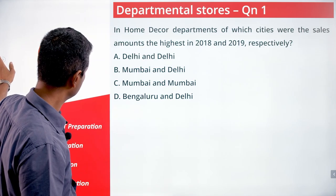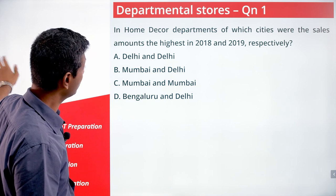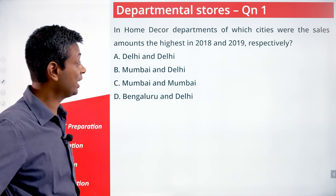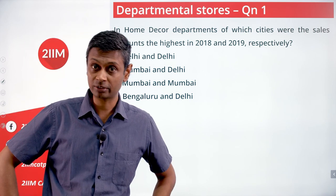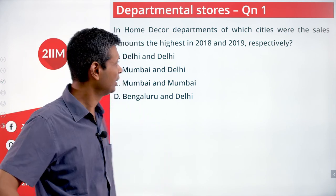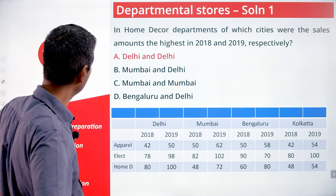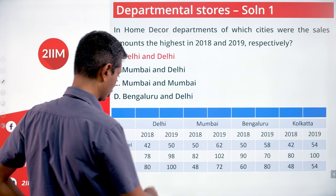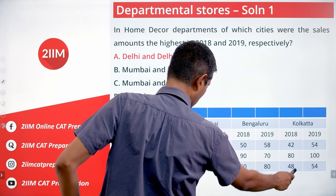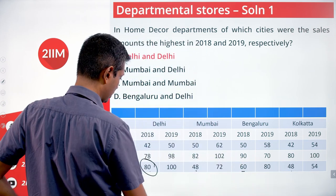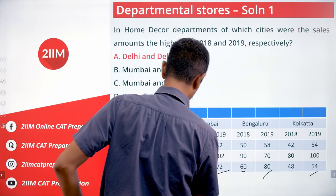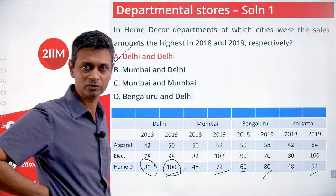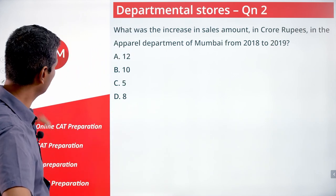In the home decor department, which cities had the highest sales amounts in 2018 and 2019? I need to look at the table. Highest in 2018 is Delhi. In 2019: 100, 72, 80, 54 — again Delhi. Delhi and Delhi. Simple question once you've got the grid.